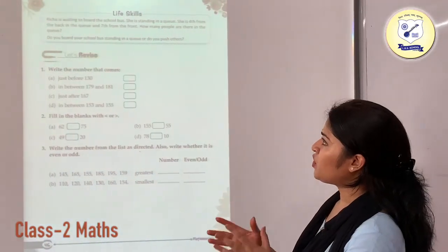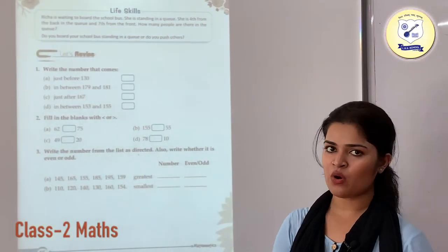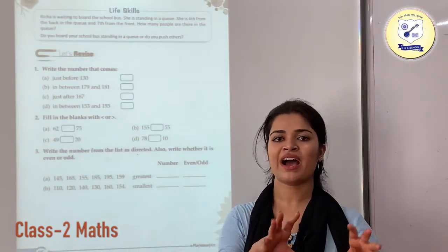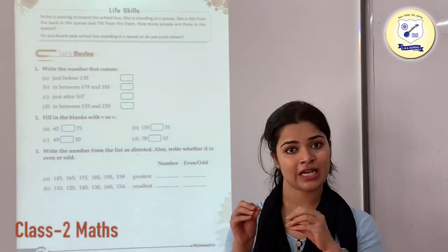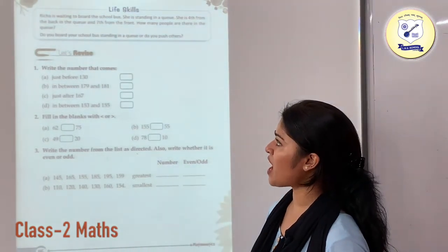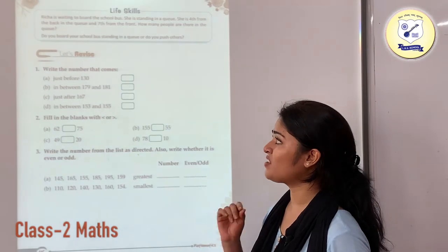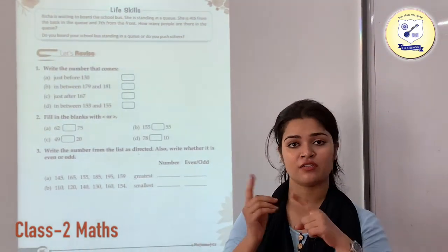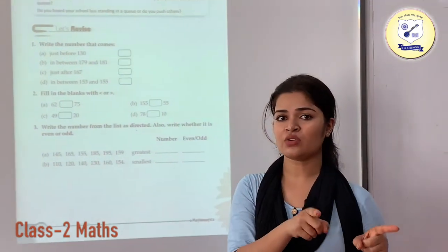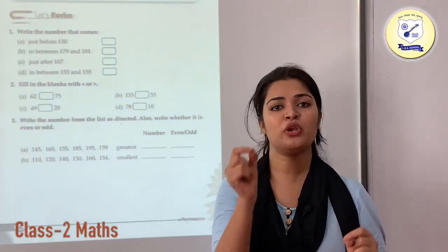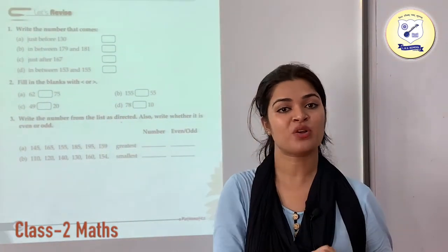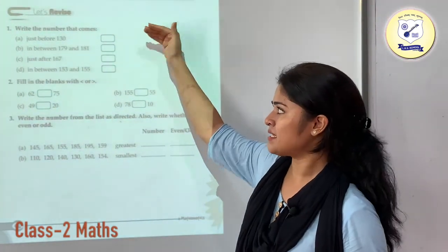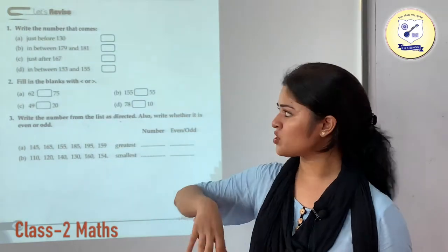Now we need to revise what we have learnt. We are done with our chapters and going to revise whatever we have learnt till now. First, we have the number that comes just before 113 — to find the number which comes just before, subtract 1 from it, giving 112. Similarly, you need to write the other numbers also.